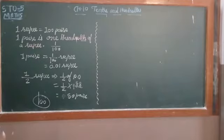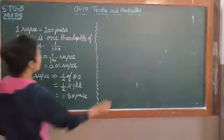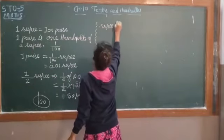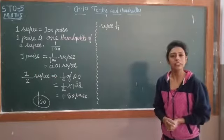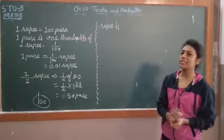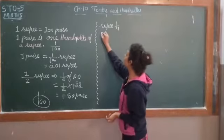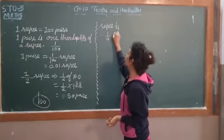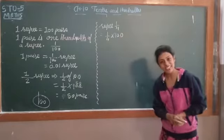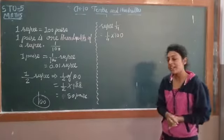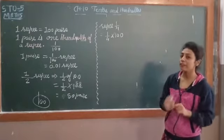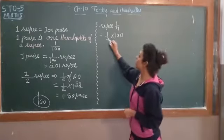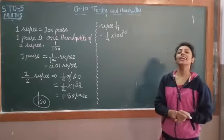Now 1/4th — 1/4th is a little hard. So let's see: 1/4th rupee. To convert 1/4 rupee to paise — 1/4 means we can say 1/4th of 100 paise. 1/4th of 100. Now 4 goes into 100, so we call that 25 for the 100.